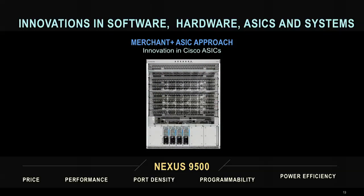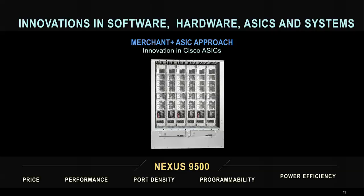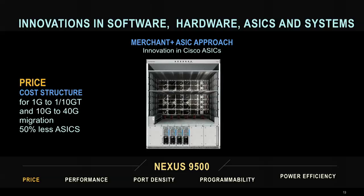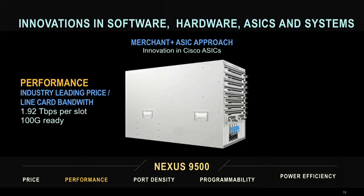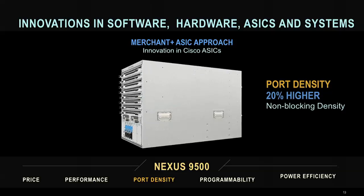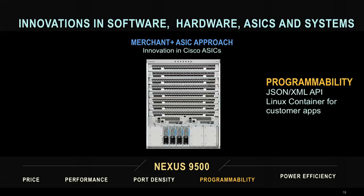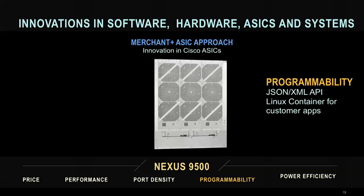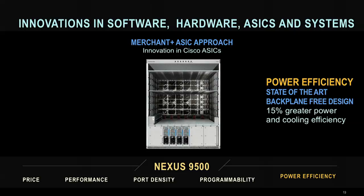The 9000 series was launched last year — a very innovative product line. It's essentially the best-of-breed combination of merchant silicon, ASICs, and NXOS software. With this combination and an innovative design with no backplane, we're able to have a very low price structure from 1 gig to 10 gig to 40 gig with fewer ASICs and lower cost. Also very high performance — over 1.9 terabits per second per line card — and 100 gig ready without a rip-and-replace of the optics. Over 20% higher port density, native programmability including containers — very important as RHEL 7 has Docker containers — and very low power and cooling costs.